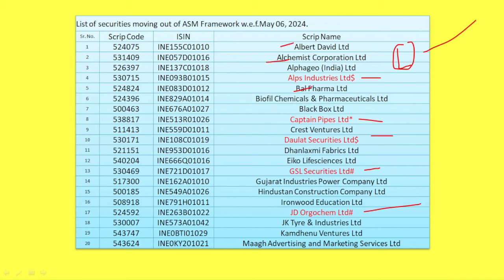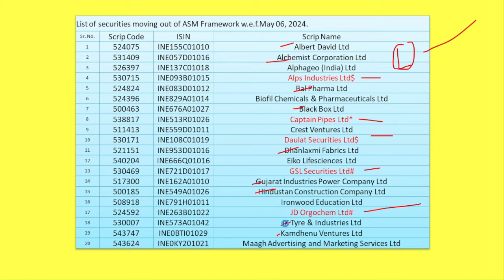Alchemist Corporation, Bal Pharma, Black Box, Dhanaxmi Fabrics, Gujarat Industries Power Company Limited, Hindustan Construction Company, JK Tyre & Industries.